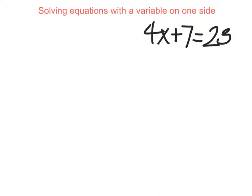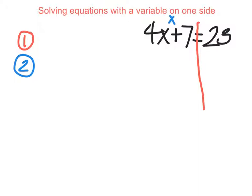When solving equations with a variable on one side, the very first thing we're going to do is draw our line through our equal sign. This helps us distinguish which side of the equation is what. For step 2, we label our sides. Our variable, x, goes on one side, and the other side is labeled EE, which stands for everything else — everything without an x needs to end up on the right side of this line.